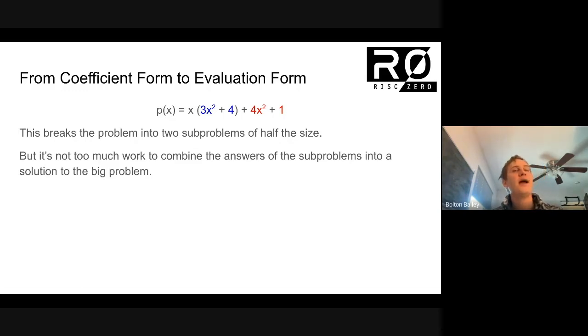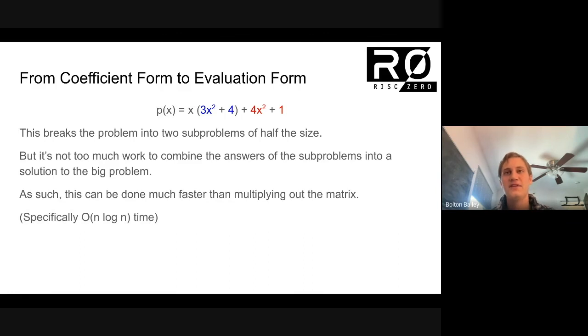But if you're halving the problem at every step, even a very large number, if you keep dividing by two, you'll very quickly get to one. And so the fact that we are doing this sort of recursion only really adds a logarithmic factor to the size of the problem. And so we end up doing much faster than multiplying out the matrix. And this is if you're familiar with big O notation, this is what's known as n log n time.